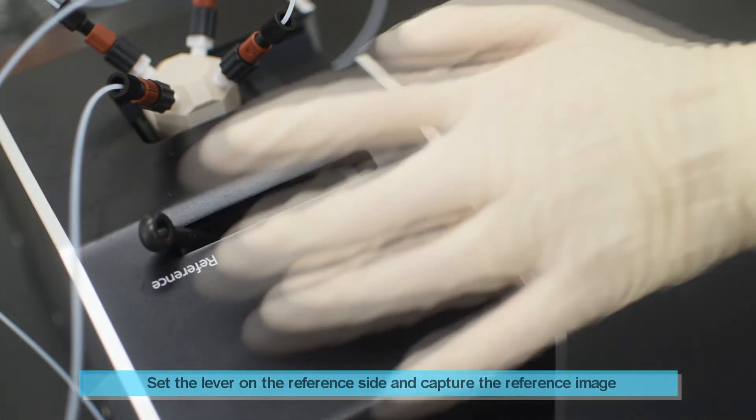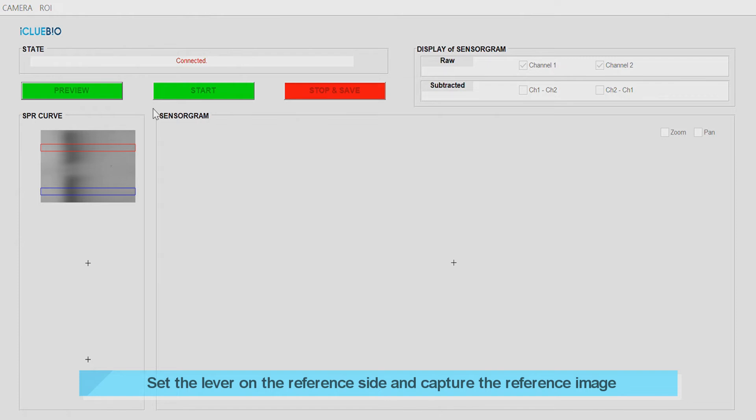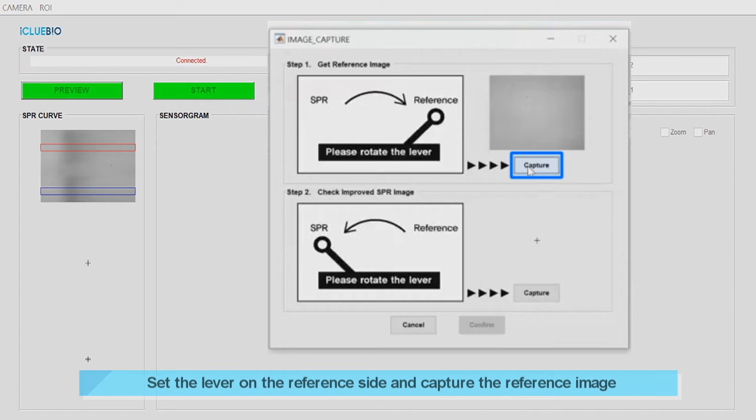The calibration of IMSTART Mini has two steps. First, set the lever on the reference side, then capture the reference image from the IMSTART Mini software. You can check a blank image on the screen.